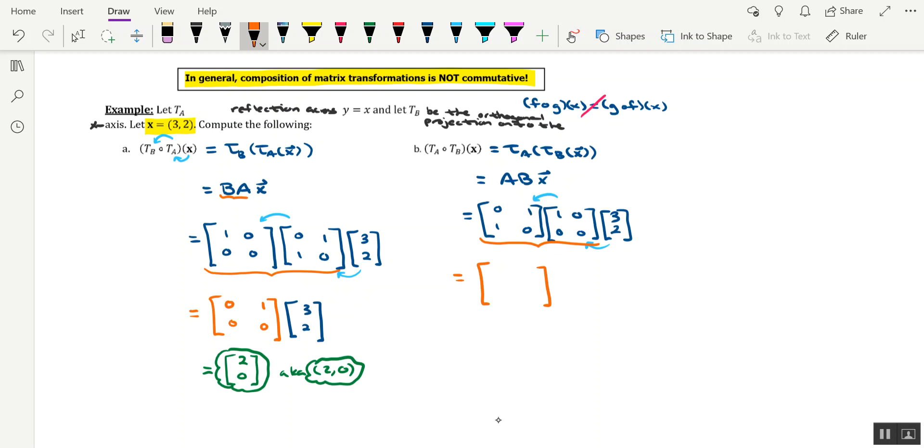The top row should be 0 and 0. The bottom row is going to be 1 and 0. And that matrix right there will take care of both transformations all at once.